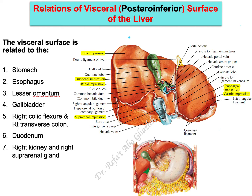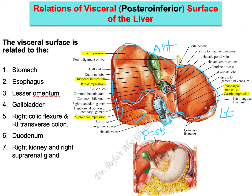Now let's move to the impressions on the visceral surface of the liver. We are looking at the visceral surface of the liver — this part is related to the diaphragmatic surface posteriorly. Remember, the anterior side is here and the posterior side is here; the inferior vena cava is always posterior.